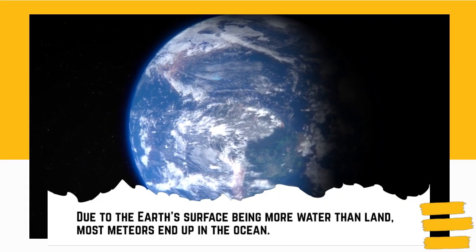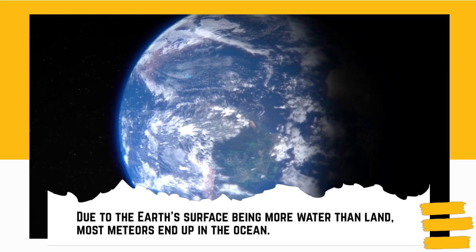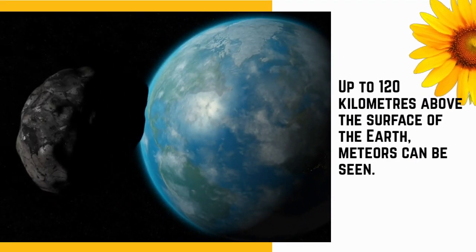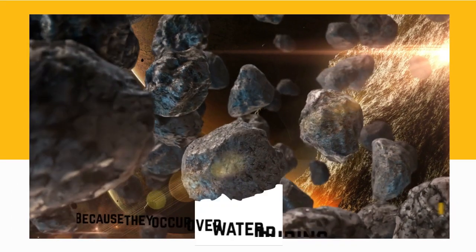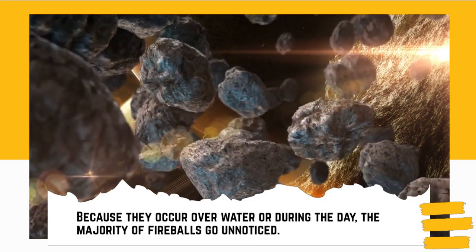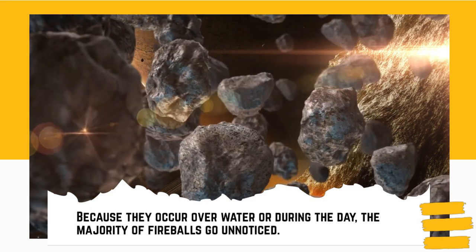Due to the Earth's surface being more water than land, most meteors end up in the ocean. Meteors can be seen up to 120 kilometers above the surface of the Earth. Because they occur over water or during the day, the majority of fireballs go unnoticed.